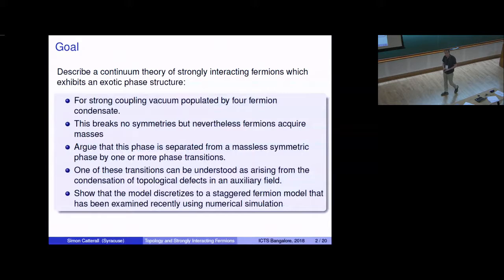For a start, as I take some coupling to infinity and some strong coupling limit, the vacuum is dominated by a four-fermion condensate. That condensate is symmetric under all the symmetries of the theory, so it breaks no symmetries whatsoever. Nevertheless, if you compute the spectrum of the fermions, if you look at the fermion mass, it's non-zero in that phase. So that is a sort of unusual situation. Most of you associate fermion masses with symmetry breaking and usually with a formation of bilinear condensates. So this is a model which apparently does not do that.